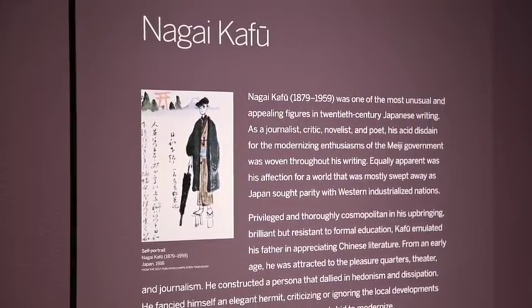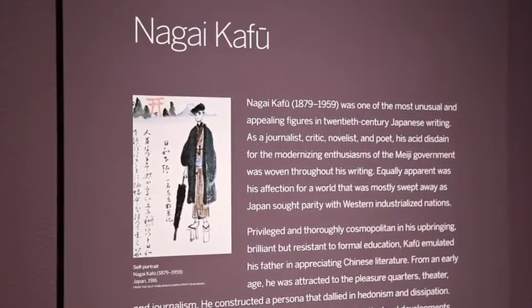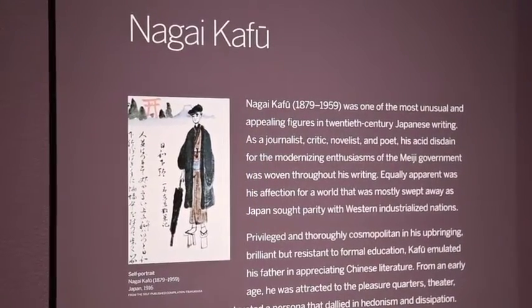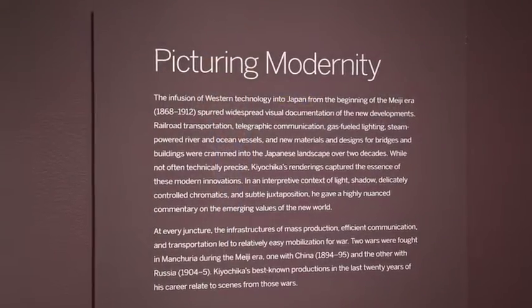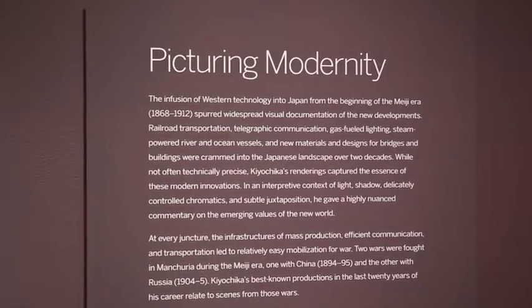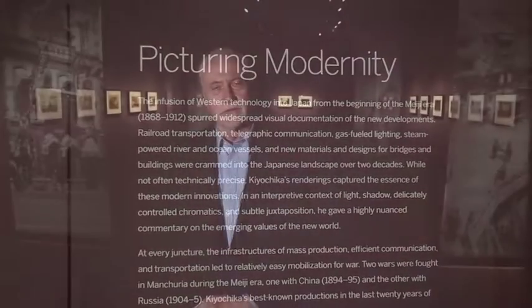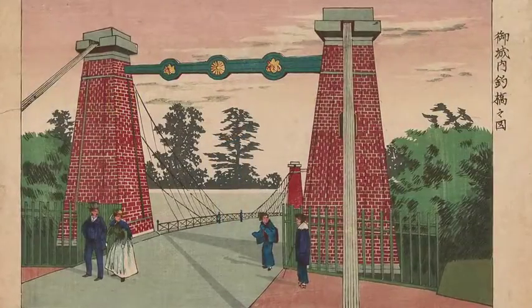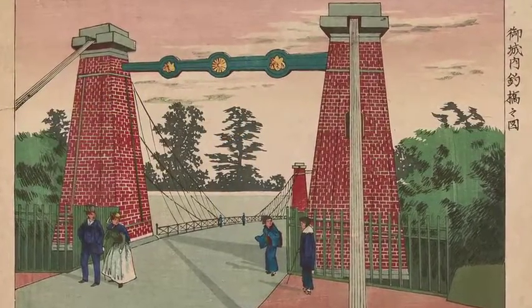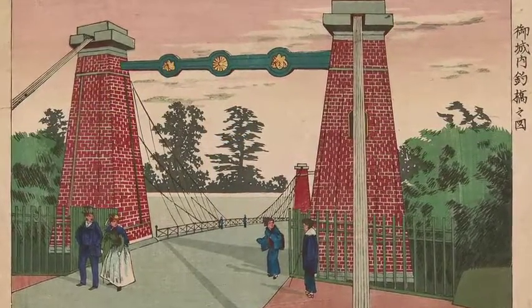Those sections introduce the resurrection of Kiyo Chika in the early 20th century, brought about by the writer Nagai Kafu. Then we journey into the puzzle of depicting modernity. We treat specific features of modern life, beginning with materials — the brick introduced into Japan as a new way of forming structures.